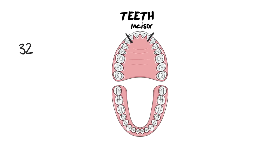Then we have four canine teeth — two at the top and two at the bottom. Canine teeth are used for tearing, particularly things that are fibrous and tough. We do have reduced canines because we don't eat a lot of raw meat and we don't use our teeth for fighting, so our canines are quite small as humans.